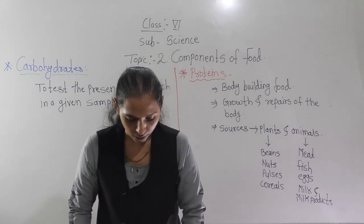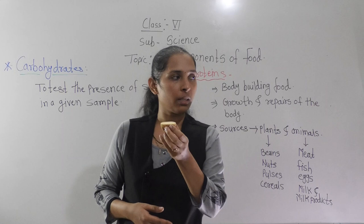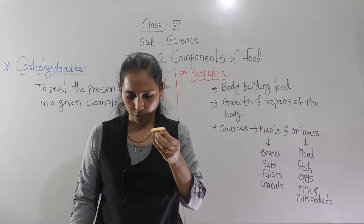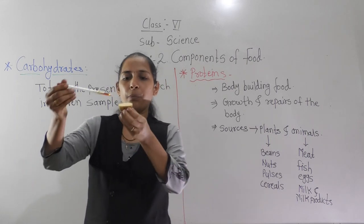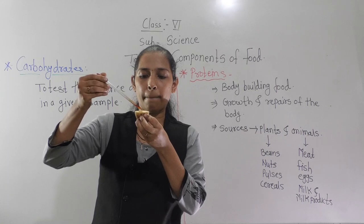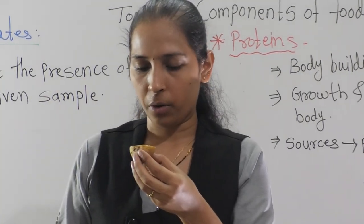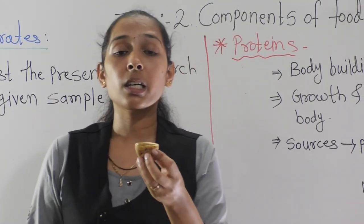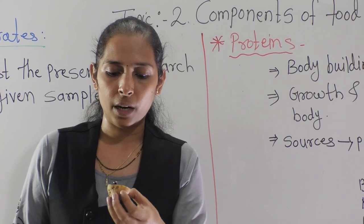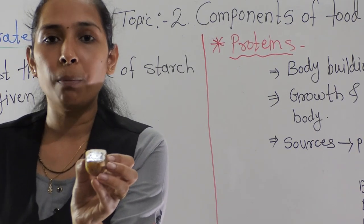I have taken one raw potato and cut it. Take the cut surface of the potato upside and put some drops of iodine solution on it. I am putting three drops of iodine solution on the cut surface of the potato. Now you can see the colour of the potato has turned blue-black.